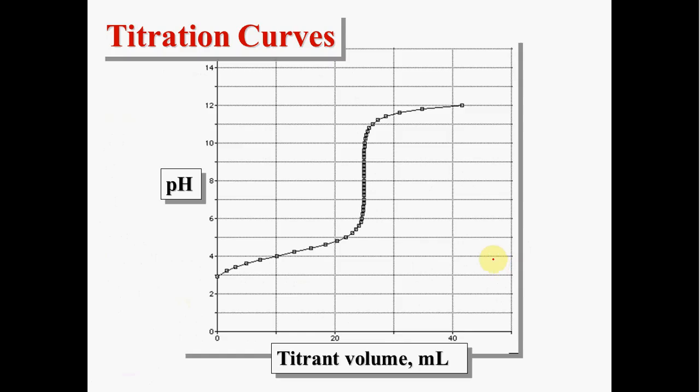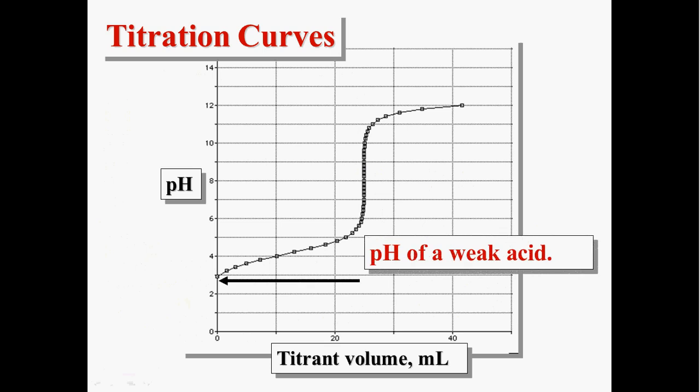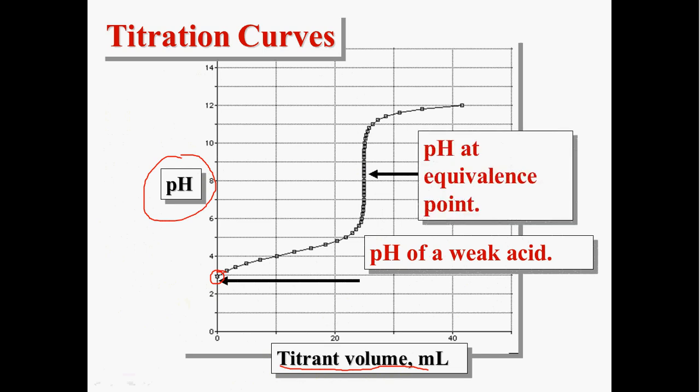A typical titration curve looks like this when you have a weak acid that you're titrating with the weak base. Your pH is always over here. Your volume of titrant, which is usually the base, is down here. So you're starting off with no base. Your pH of your weak acid would be your x squared over your HA, equivalent to your Ka. As you start titrating, you have this entire range here called the buffer range.